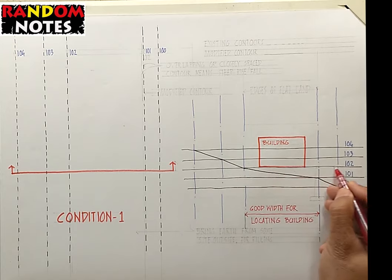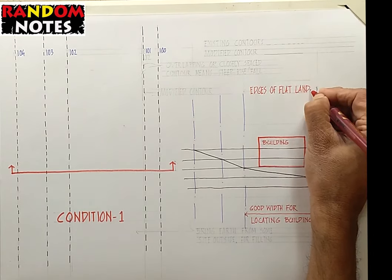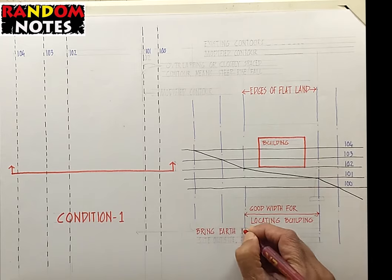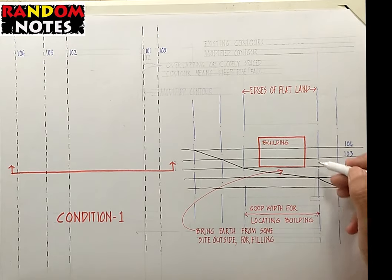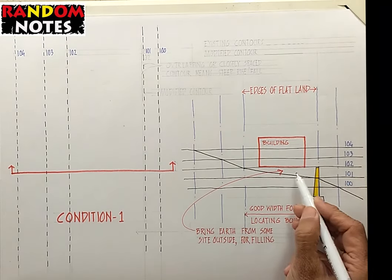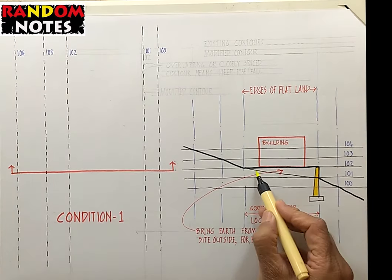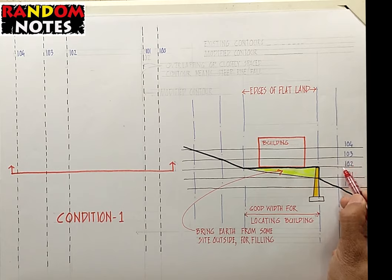We will achieve flat land below the building. These are the two edges of the flat land at level 102. For getting this flat land, we will have to fill earth in that triangular space under the building. Earth will be brought from some other site and filled here. This edge needs to be closed so that it can retain the earth for achieving the flat land. This is the new profile of land. This is the earth fill retained by the retaining wall. We now have a flat crown within these two edges which is at level 102.